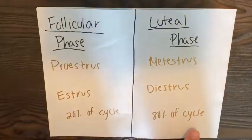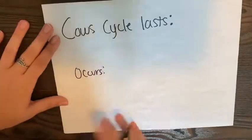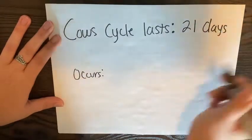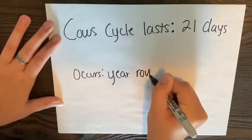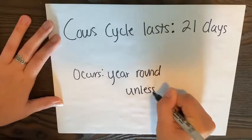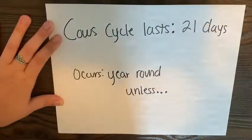In a cow, this cycle normally takes 21 days and generally continues all year round unless she becomes pregnant or is lactating.